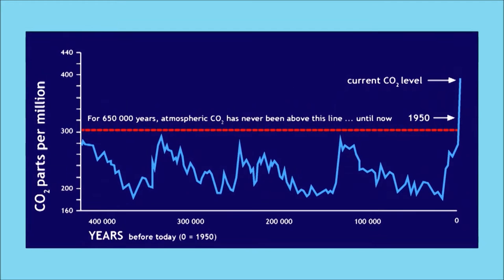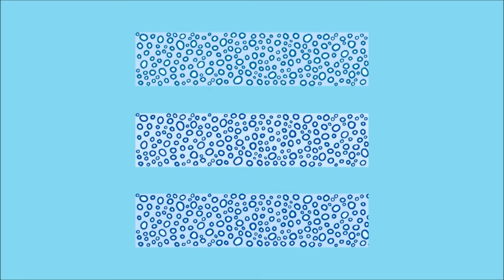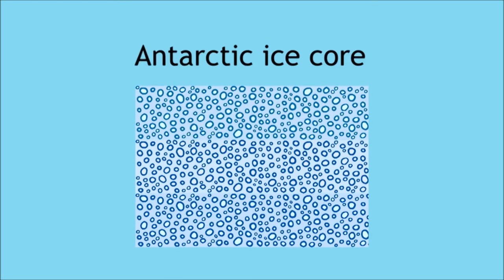This graph shows that carbon dioxide levels in the atmosphere are higher now than at any time that humans have inhabited this planet. We can measure the concentration in the past, for example, by analyzing tiny pockets of air that have been trapped in Antarctic ice as it got laid down year by year.